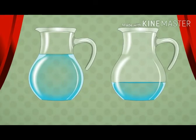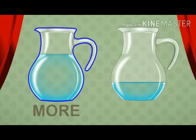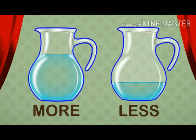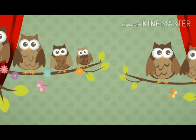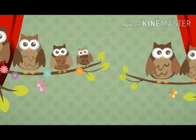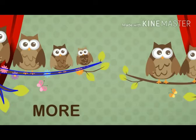Here, the water in the left jar is more and the water in the right jar is less. In this picture, there are some birds sitting on the branches of trees. We can easily see that the birds on the left branch are more and the birds on the right branch are less.